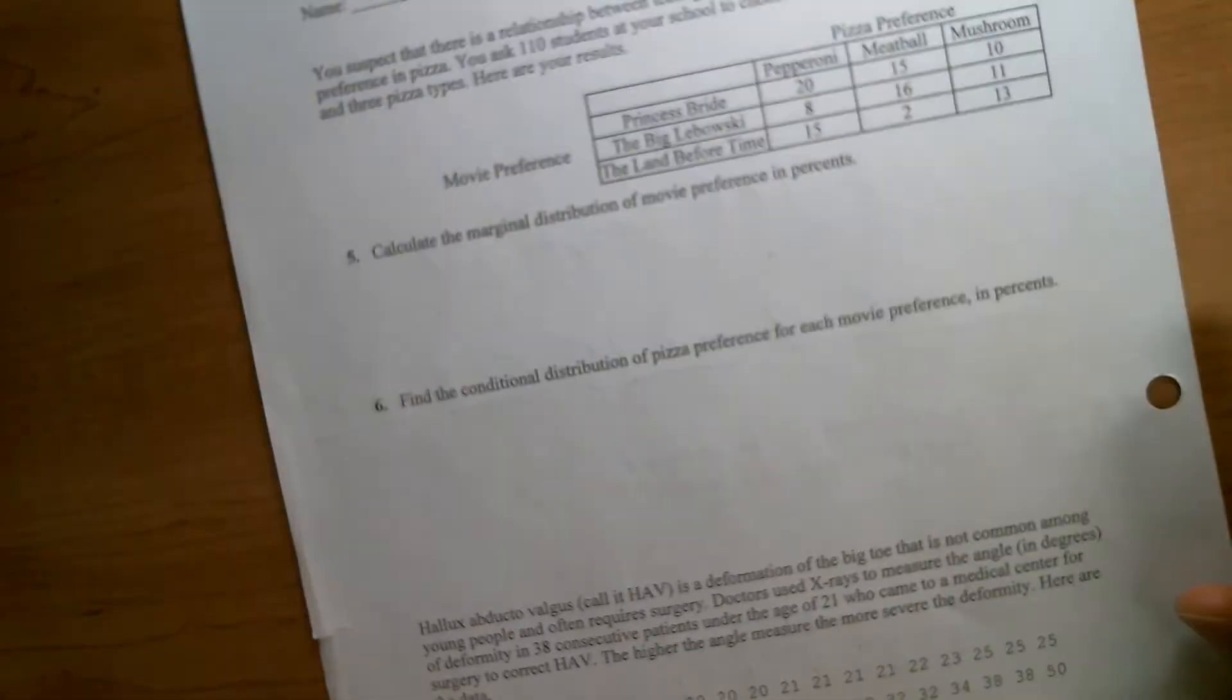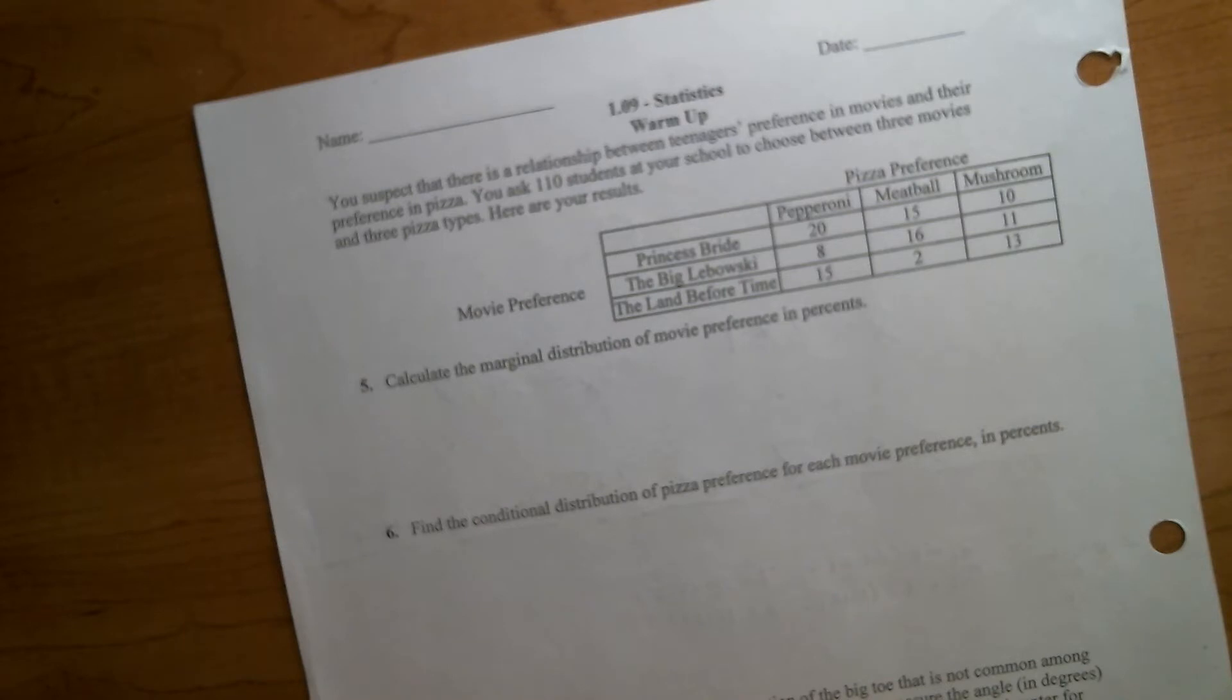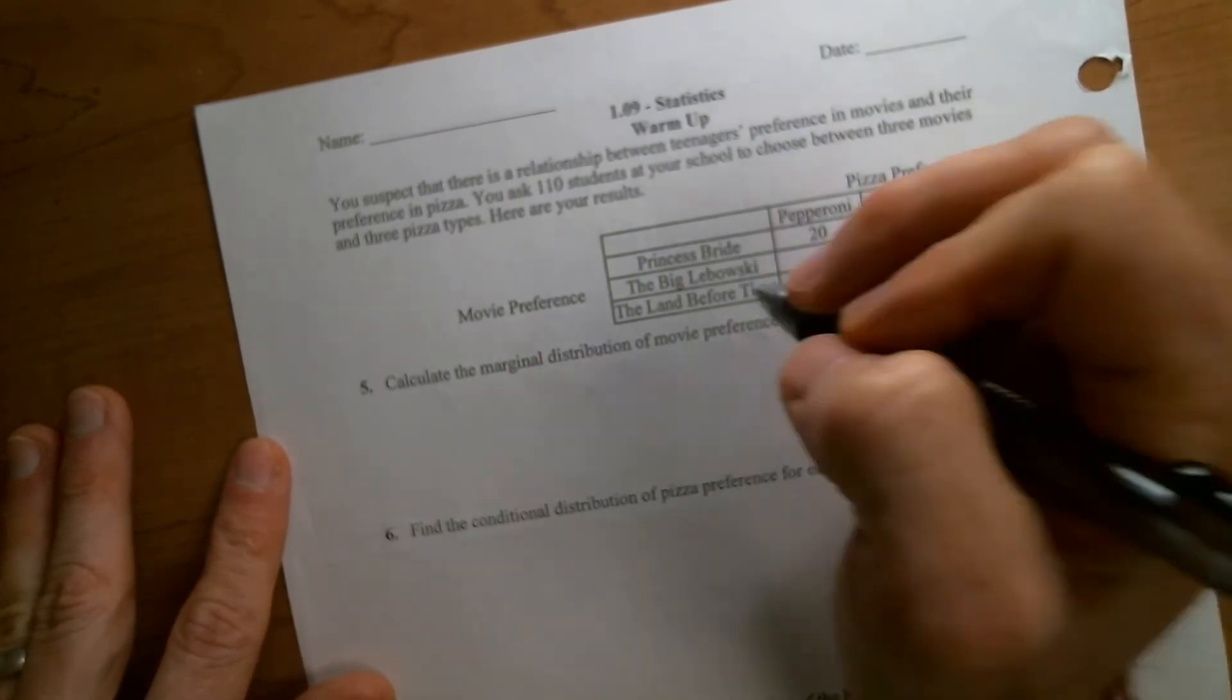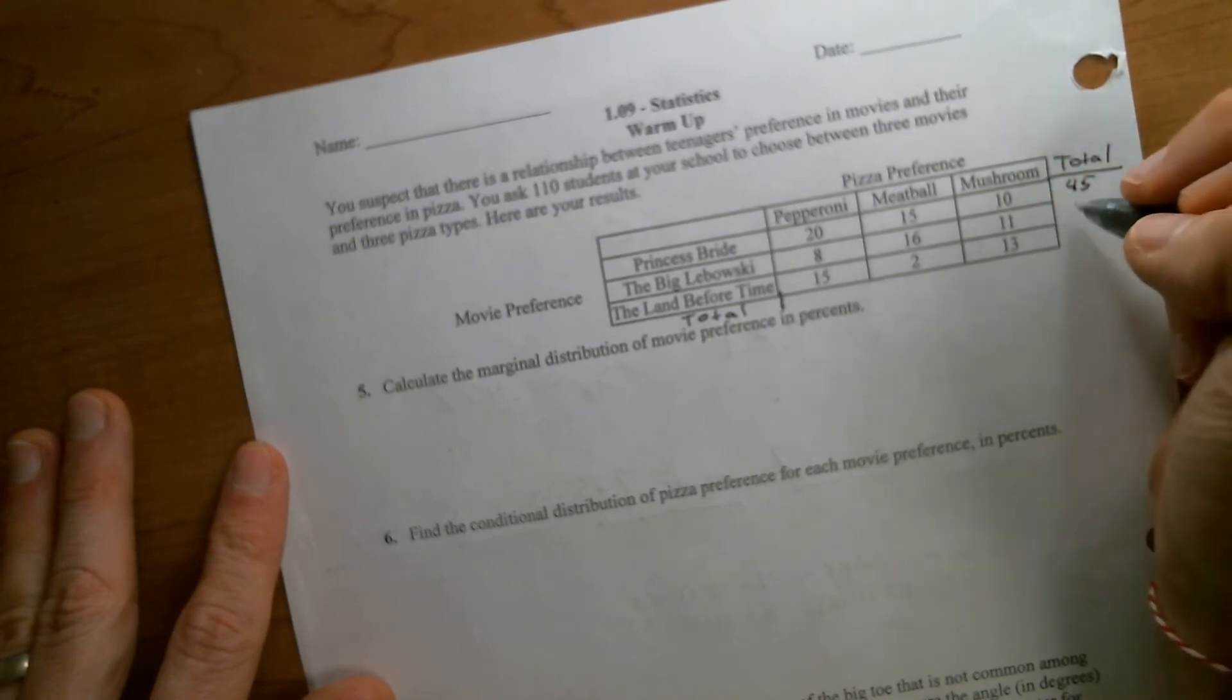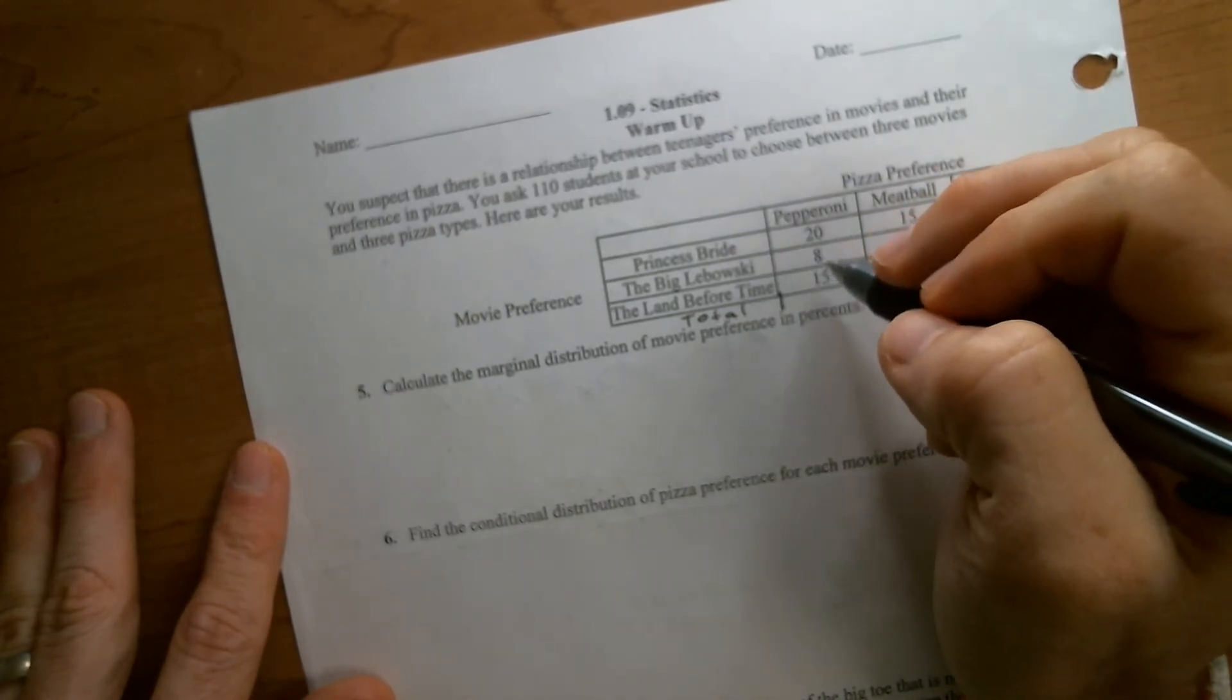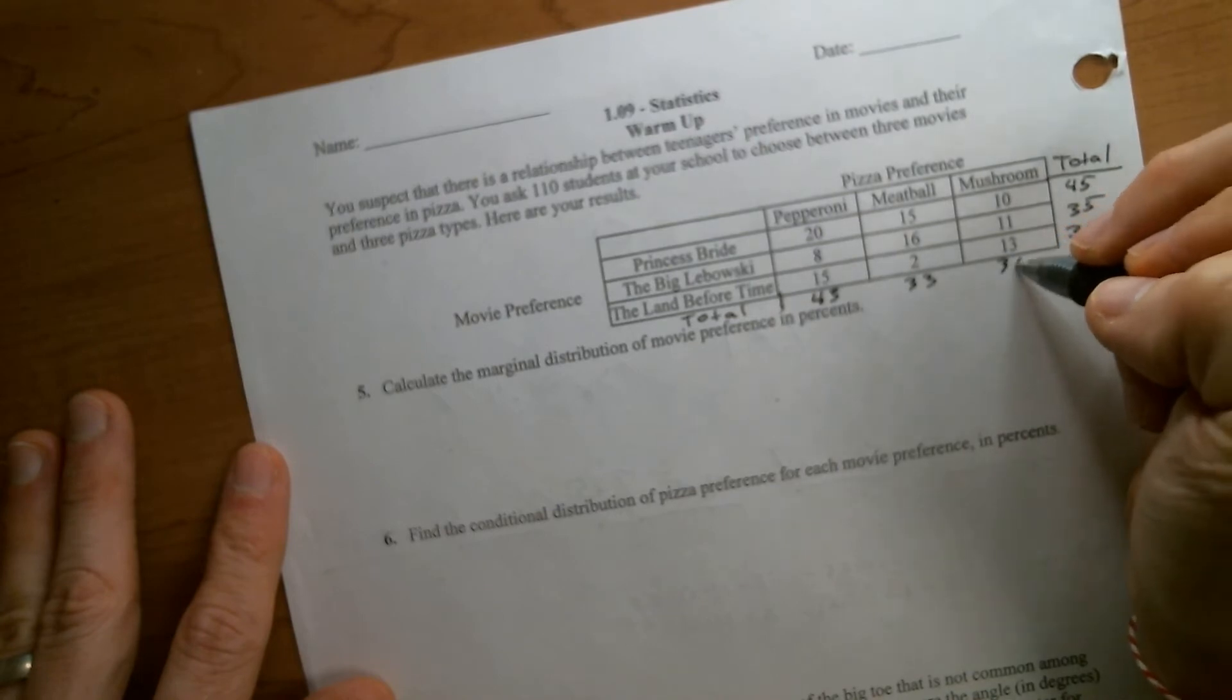Taking a look at the back. You suspect that there is a relationship between teenagers' preference in movies and their preference in pizza. You ask 110 students at your school to choose between three movies and three pizza types. Here are your results. Let's calculate the marginal distribution of movie preference in percents. So first things first, if I don't have table totals, I'm going to add table totals. So 35, this would be 45, 27 plus 8 is 35, 15 is another 30 right there, 70, 80, and then there's 110 people in total. And then going down, this would be 43, this would be 33, this would be 34.